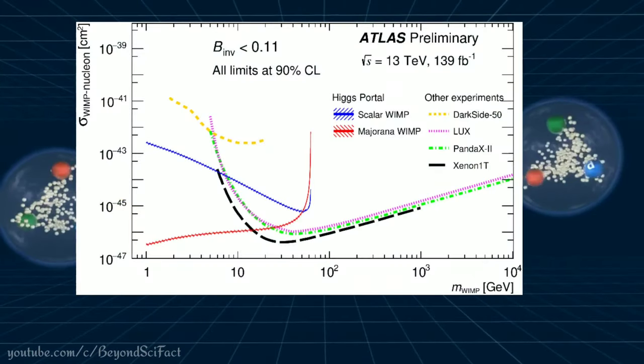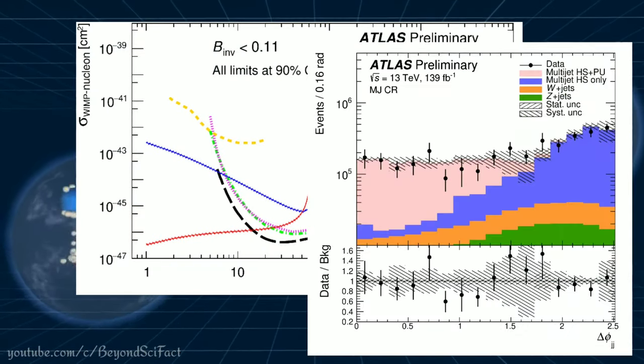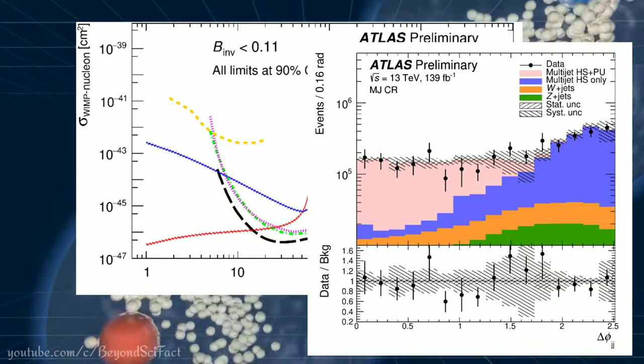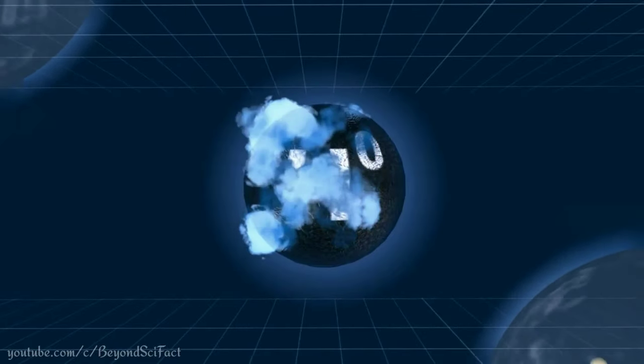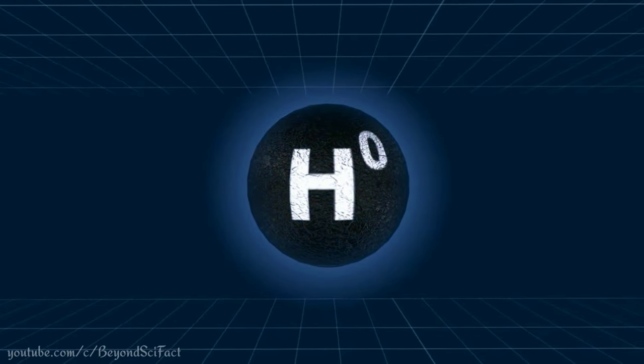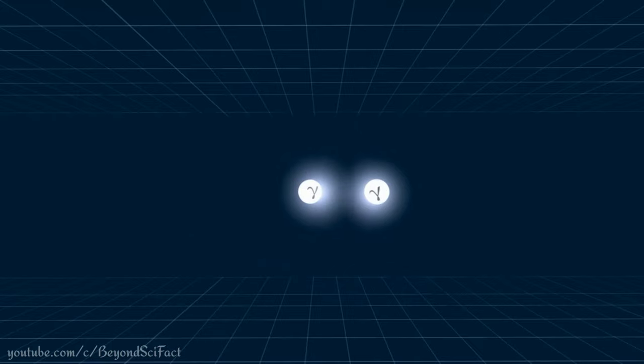The data show no excess of such characteristic jets over the expected background. ATLAS concluded at a 95% confidence level that no more than 13% of Higgs bosons produced in the Large Hadron Collider could transform into invisible particles.